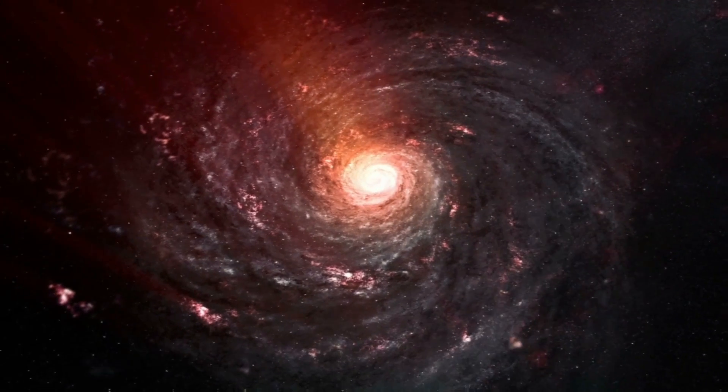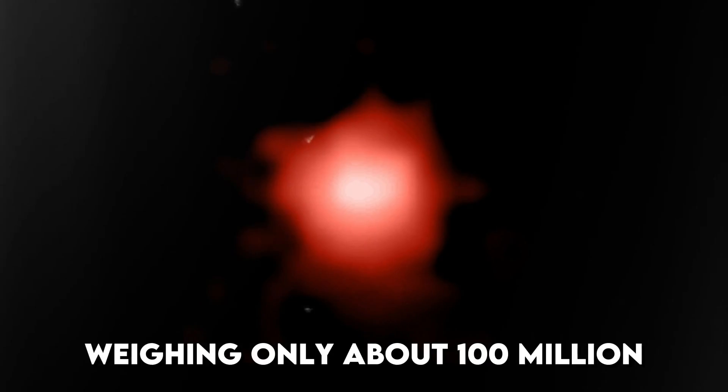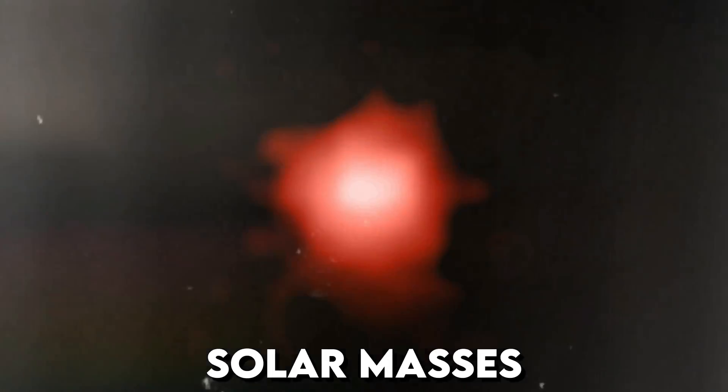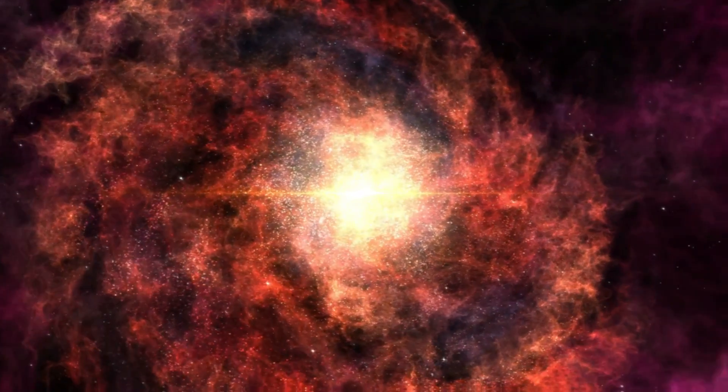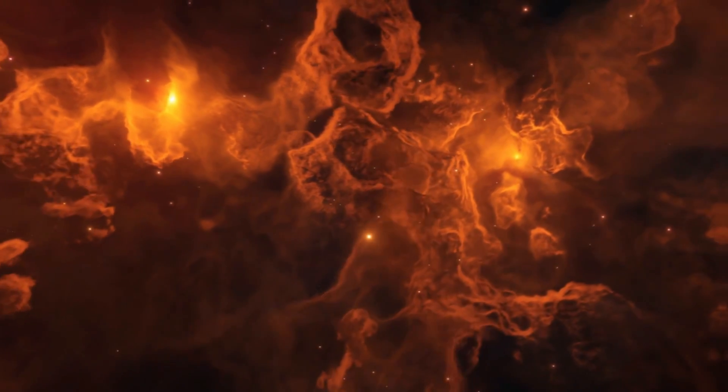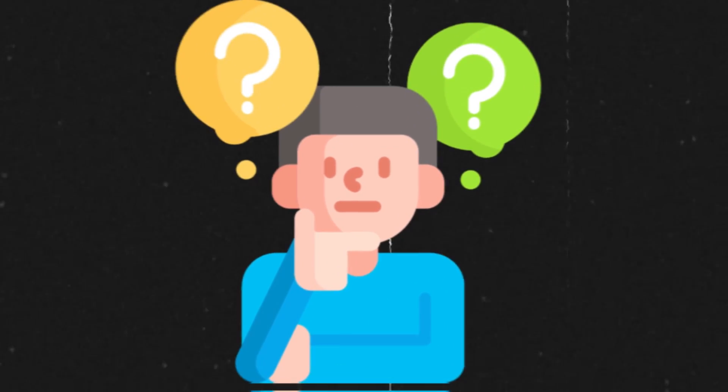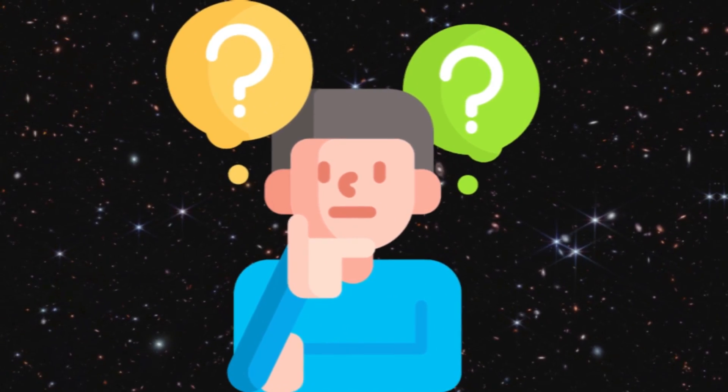But that's not all that makes this galaxy so remarkable. JADES-GSZ-13-0 is very low in mass, weighing only about 100 million solar masses. Yet, this tiny galaxy is extremely active in star formation, producing stars at a rate similar to that of the Milky Way. It's hard to believe that such a feat was possible so early in the universe's history.